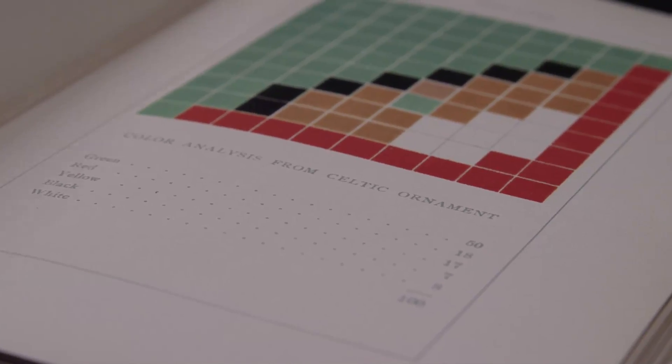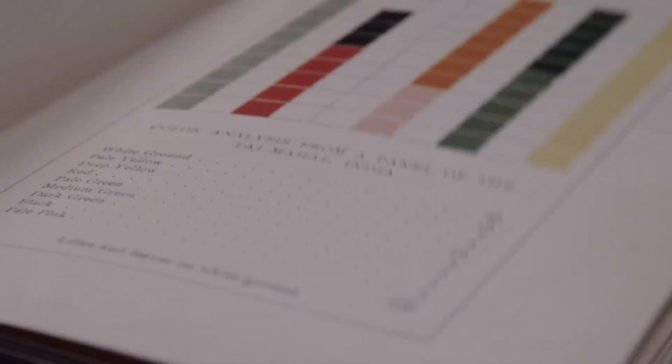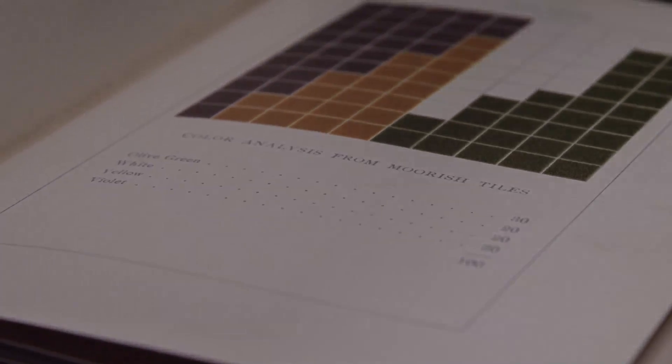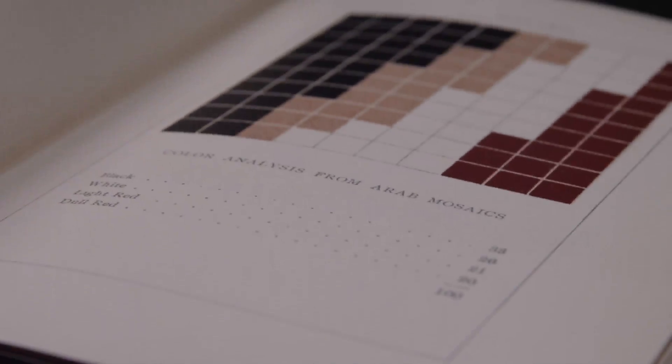Her square format predates Joseph Albers' iconic homage to the square by some 50 years. This series of gridded squares, each 10 by 10, analyze the proportions of color derived from actual objects: Assyrian tiles, Persian rugs, an Egyptian mummy case, and even a teacup and saucer.